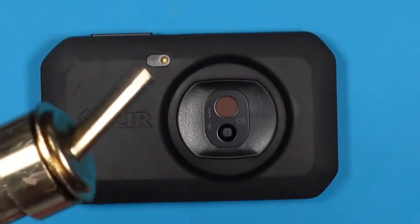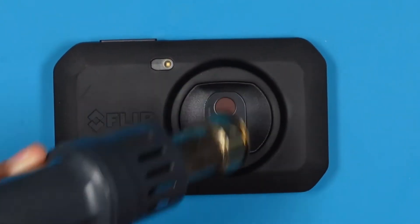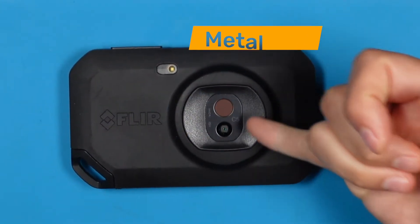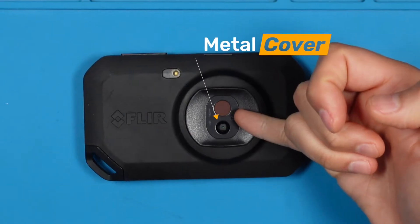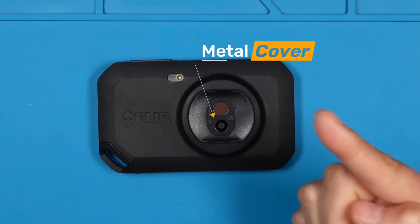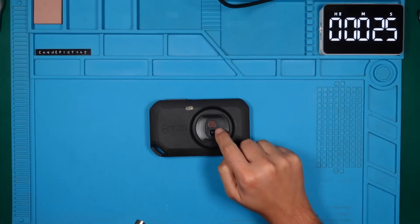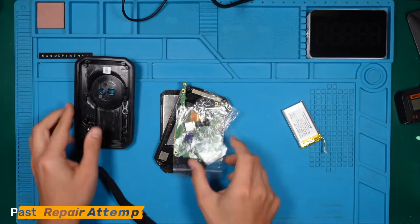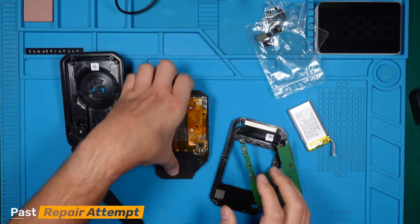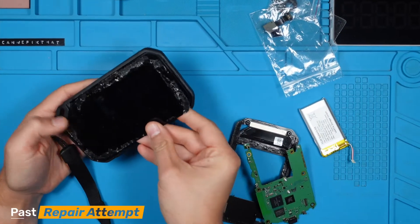The most straightforward way to access the thermal camera module is by taking off the metal cover. It took me a few attempts in the past to figure this out. My first go with the FLIR C5 was a bit of a mess. Because of its weather proofing, the entire case is sealed with glue, making it quite a challenge to crack it open.